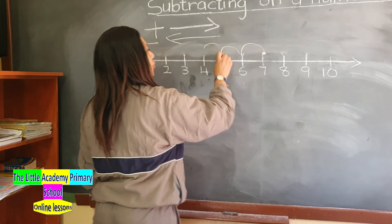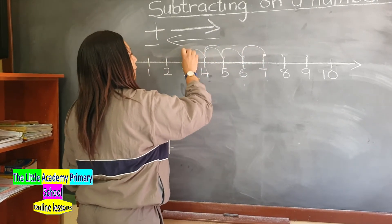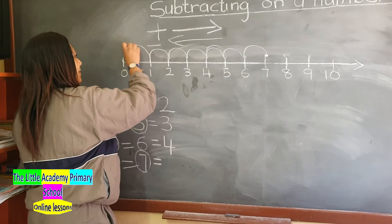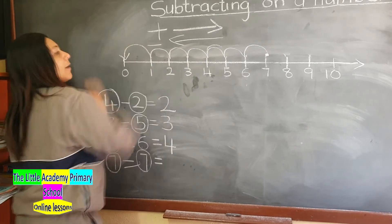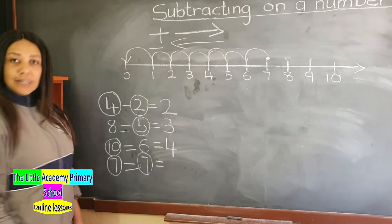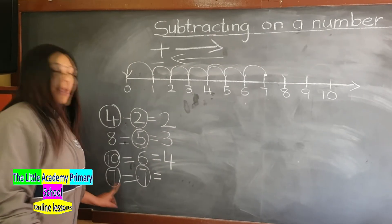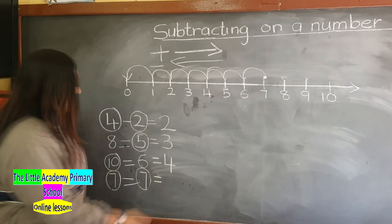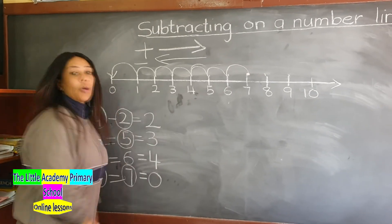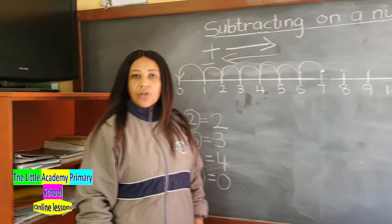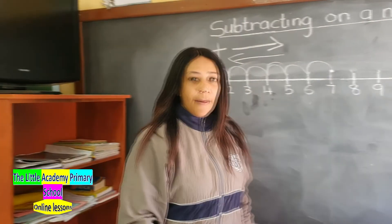From number 7 — 1, 2, 3, 4, 5, 6, and 7 — we end at 0. So which means 7 take away 7 is 0. Thank you very much and do enjoy your day.